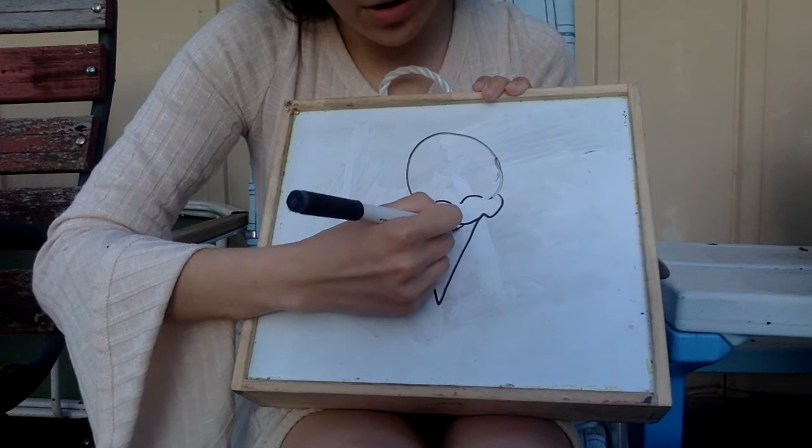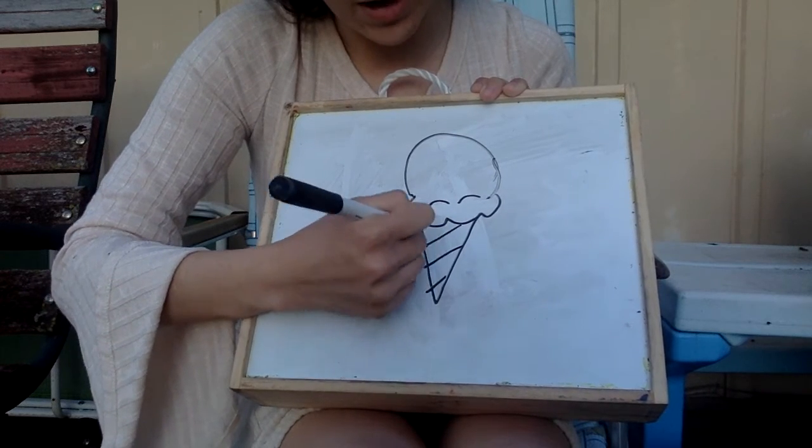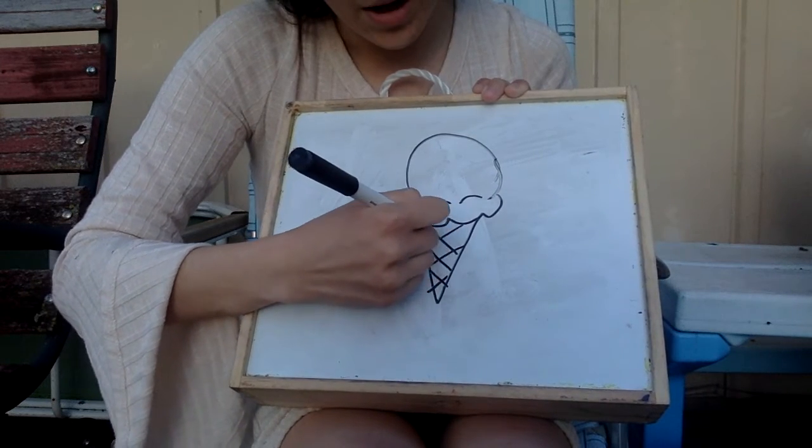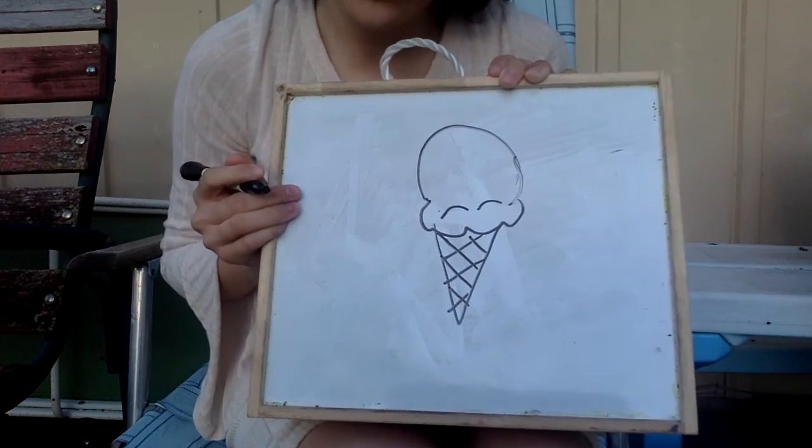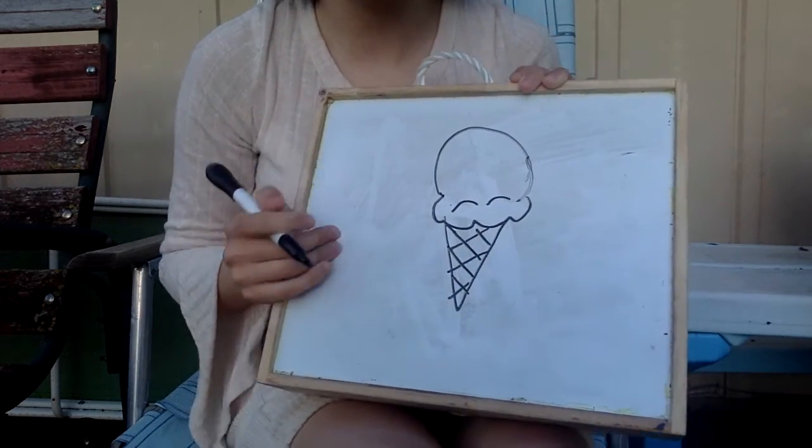Usually ice cream cones have these lines that go down and across, kind of like a checkered pattern. That looks like a regular ice cream cone, doesn't it? It looks kind of like a cartoon.